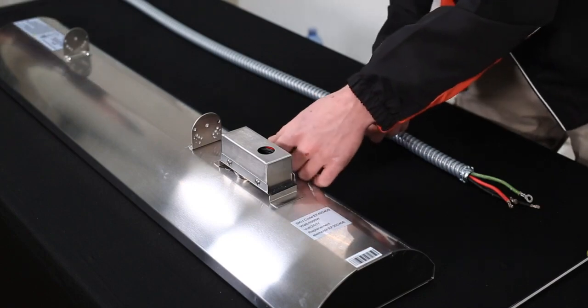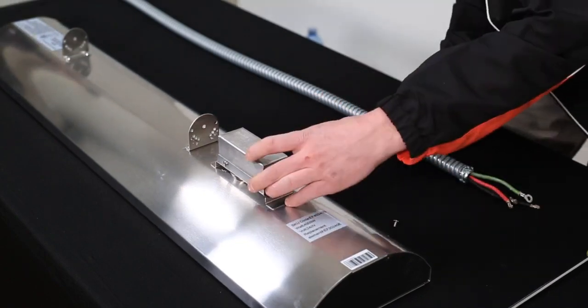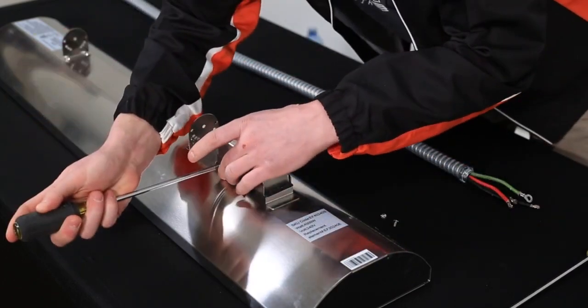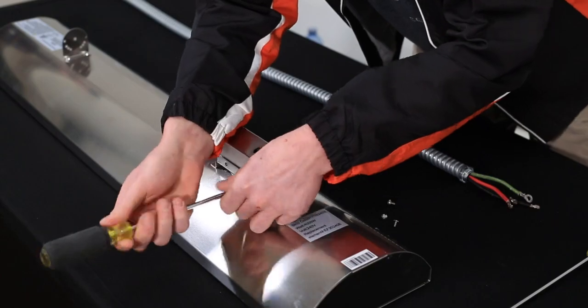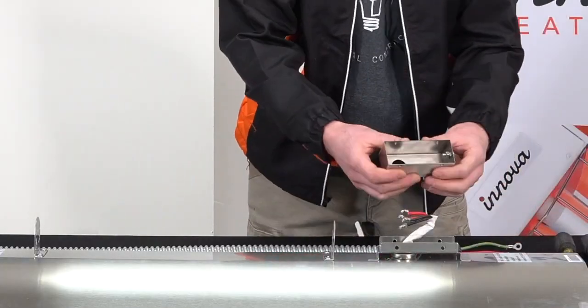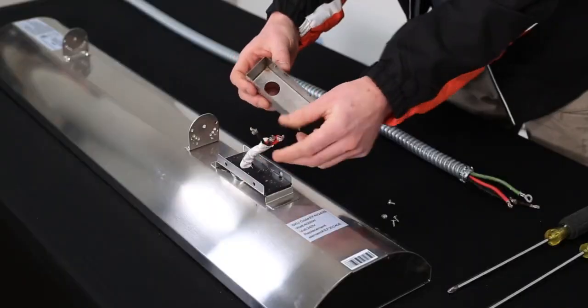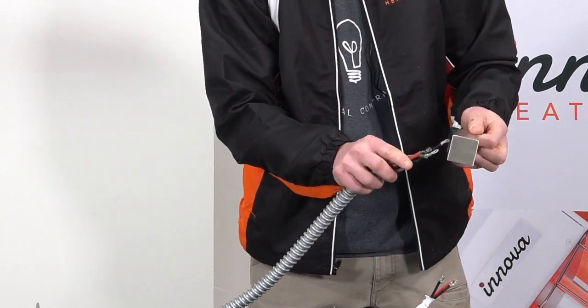First things first, remove the four ground screws. Next, you're going to attach the wire to the cover.